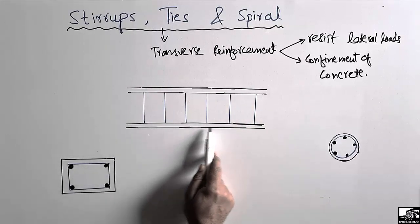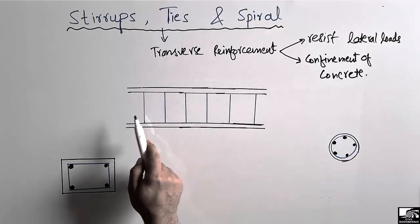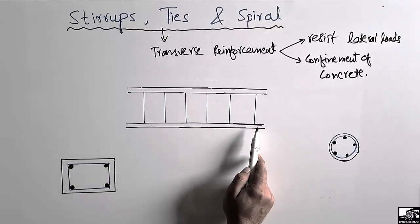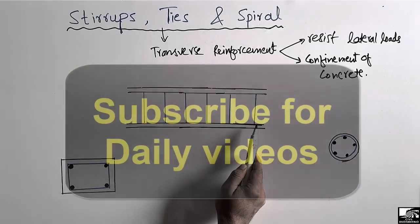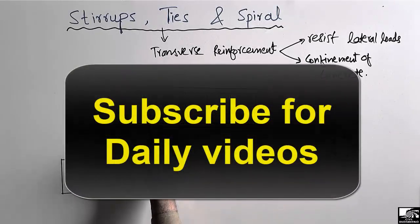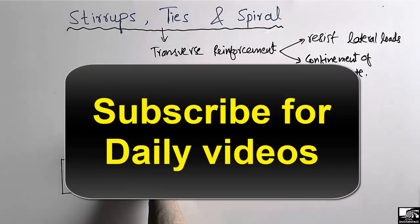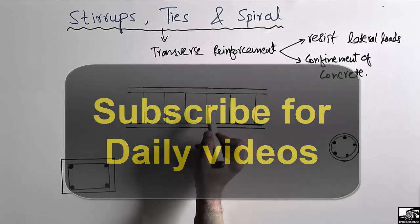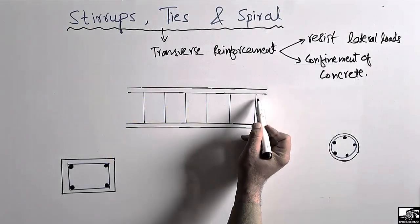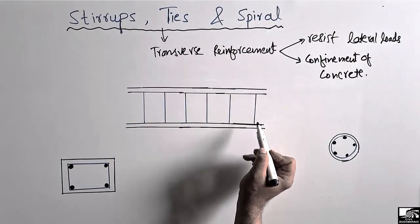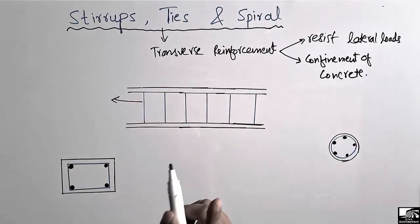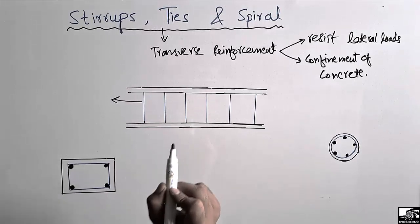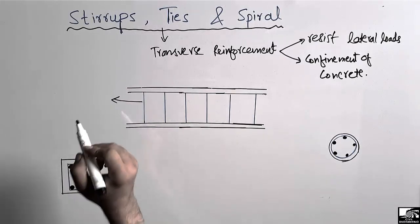Consider this example of a beam shown with transverse reinforcement. The reinforcement used to confine the concrete — shown here as vertical lines — is known as transverse reinforcement, and in the case of beams, this reinforcement is known as stirrups.